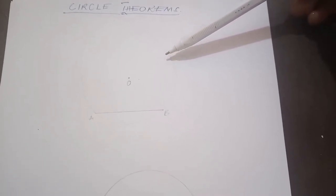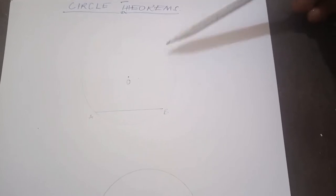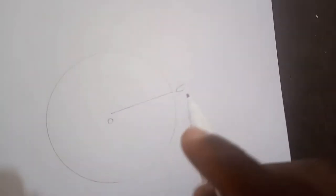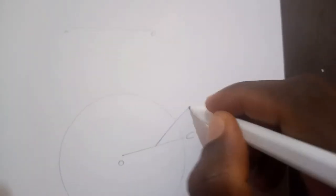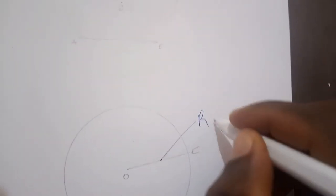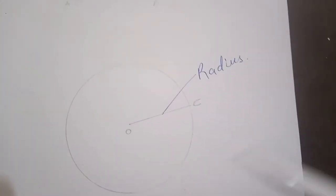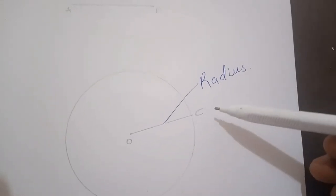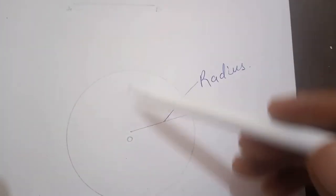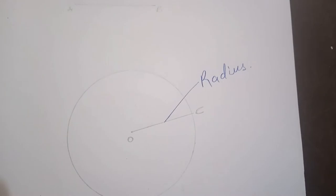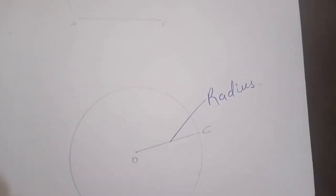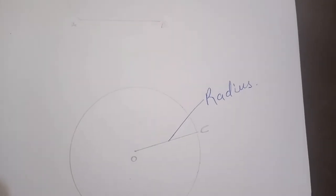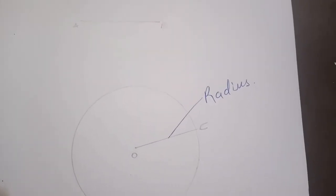So later in this topic, anytime I mention the radius of the circle I'm just talking about something like OC — so this is the radius. Any line from the center of the circle to any part of the circumference qualifies to be called the radius of the circle.